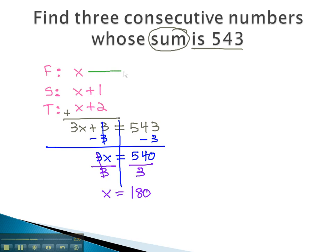Recall that we said x was the first number, 180. By adding 1 to this, we get the next number, 181. By adding 2, we get 180 plus 2, or 182. These are the three consecutive numbers whose sum is 543.